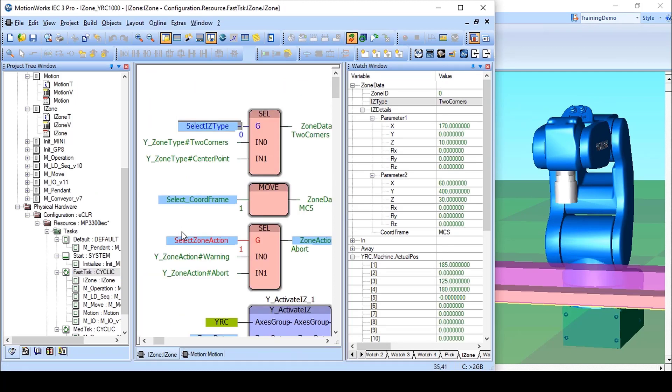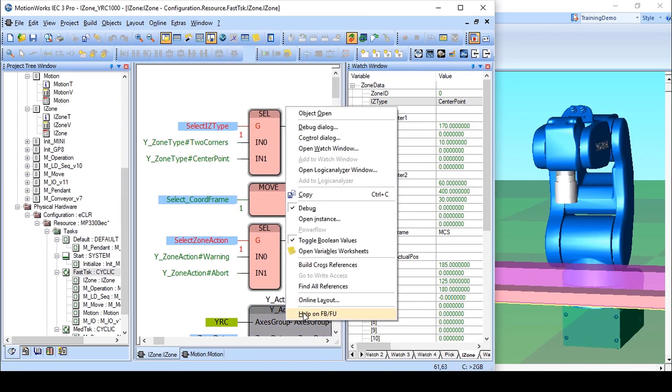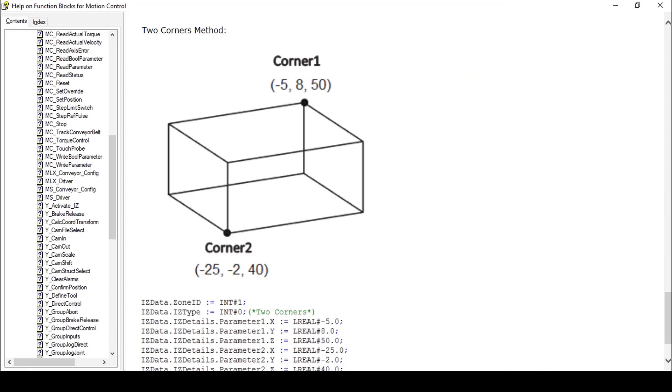The cuboid region can be defined in one of two ways, either two corners or center point, and the help gives a good description of that. Two corners requires entry of the x, y, and z coordinates of two opposing corners of the cuboid.